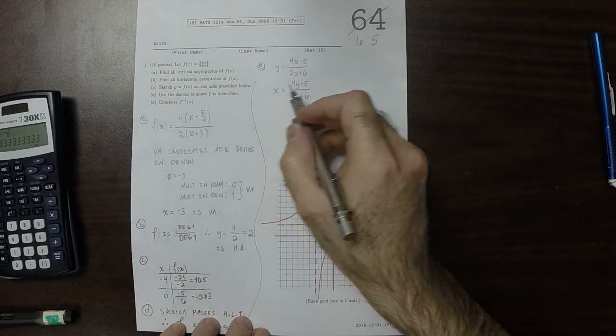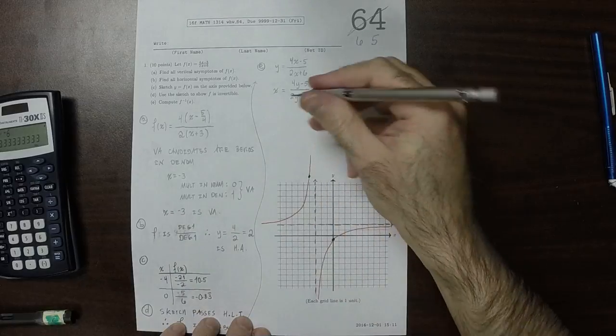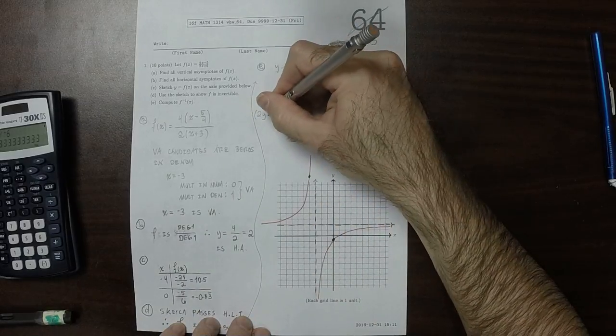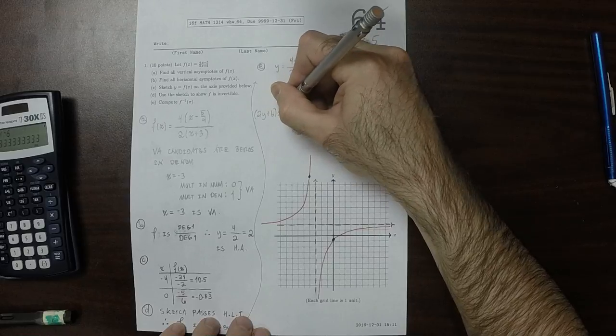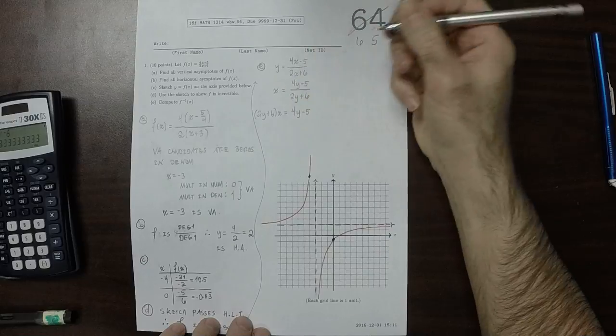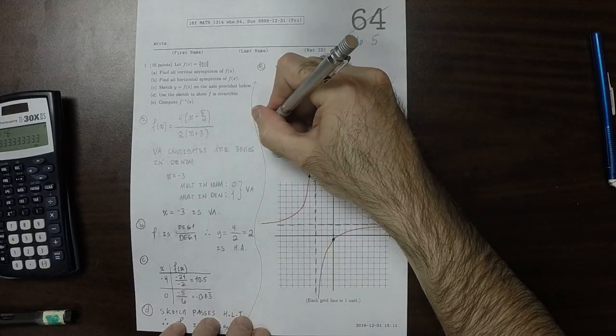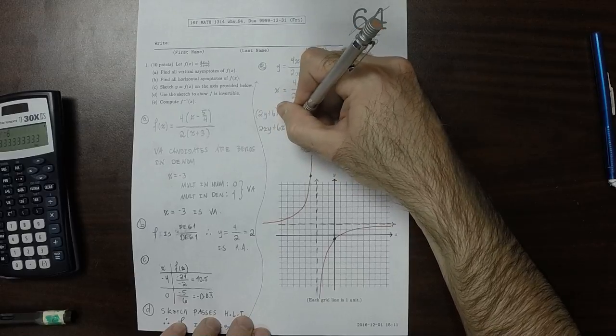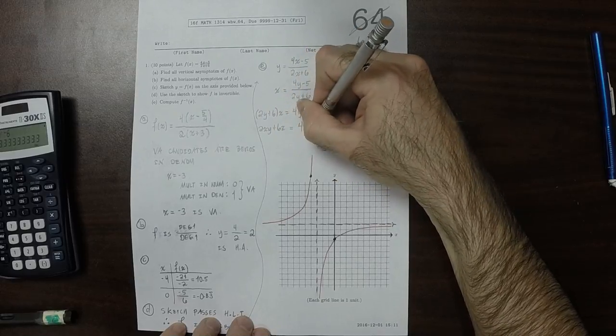And now I'll multiply both sides by the denominator of the right-hand side. So 2y plus 6 multiplied by x is 4y minus 5. So 2xy plus 6x is equal to 4y minus 5.